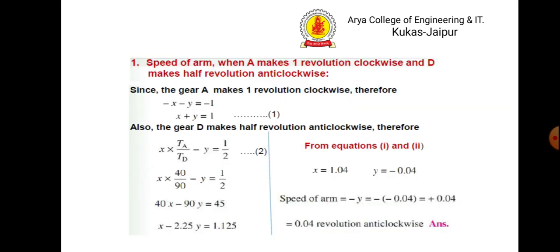For Case 1, speed of arm when a makes one revolution clockwise: since a makes one revolution clockwise, minus x minus y equals minus one. Gear d makes half a revolution, so x multiplied by ta by td minus y equals minus one half. By solving these two equations we find x and y. The speed of the arm from the table is minus y, giving 0.04 revolutions anti-clockwise.